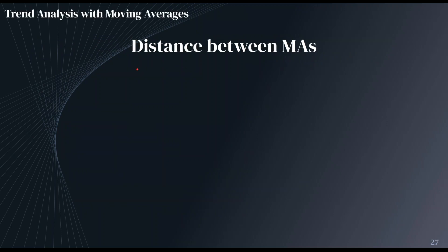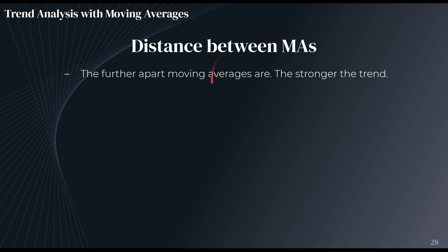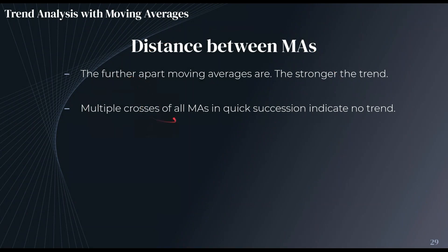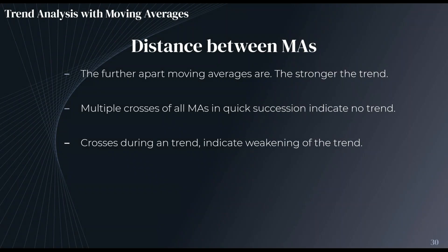When looking at multiple moving averages, the most important thing is the distance between them. The further apart the moving averages are, the stronger the trend — when they go really far away from each other, the trend is growing stronger. When they cross — so when there's zero distance between them — that's also very important. If there are multiple crosses in quick succession, this is an indication of there being no trend. If crosses occur during a trend but not with all moving averages, this could be an indication of the trend weakening.